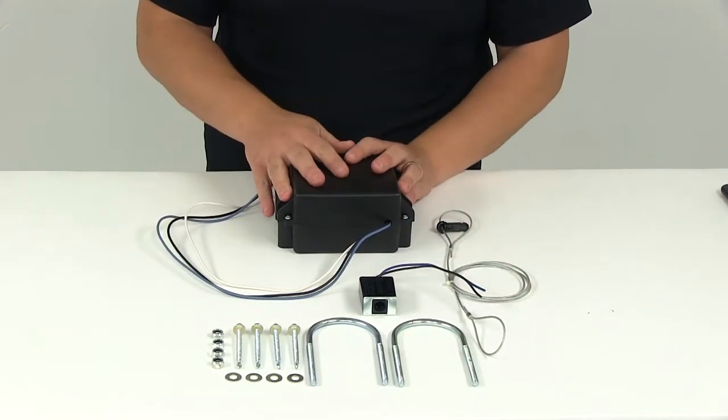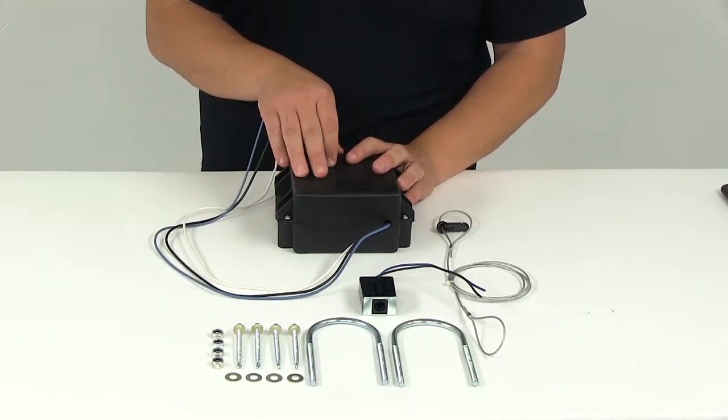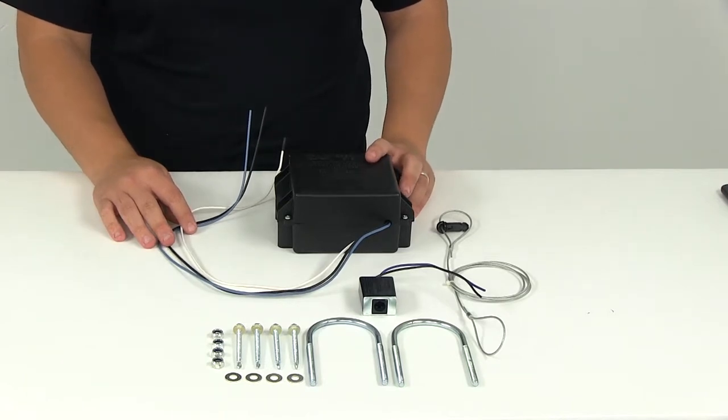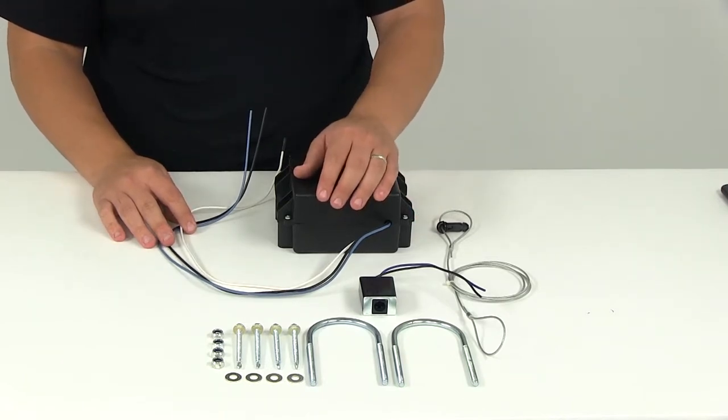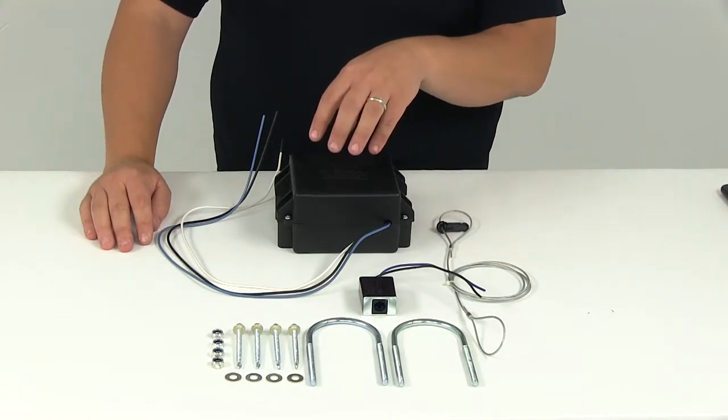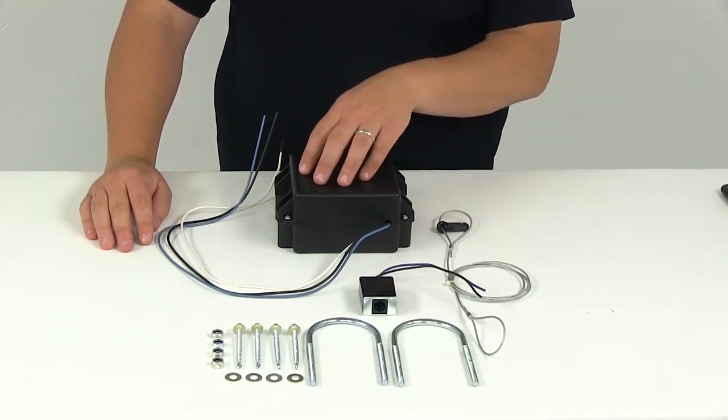What a breakaway switch kit does is this system is designed to bring trailers safely to a stop by activating the electric trailer brakes should a trailer be disconnected while driving. For instance, if your safety chains were to fail, then the breakaway system would be used as a last line of defense.